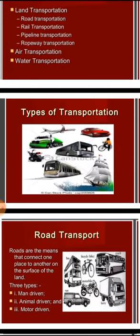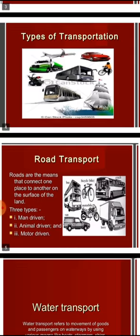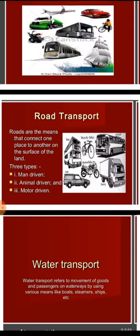Road transport: roads are the means that connect one place to another on the surface of the land. This type can be man-driven, animal-driven, or motor-driven — engine vehicles which are used in road transport.